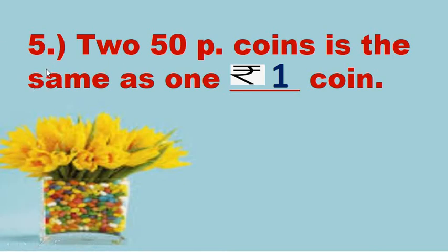Number five. Two fifty paisa coins is the same as one rupee coin. Now I will dictate very slowly so that you all can copy it. Two fifty paisa coins is the same as one rupee coin.